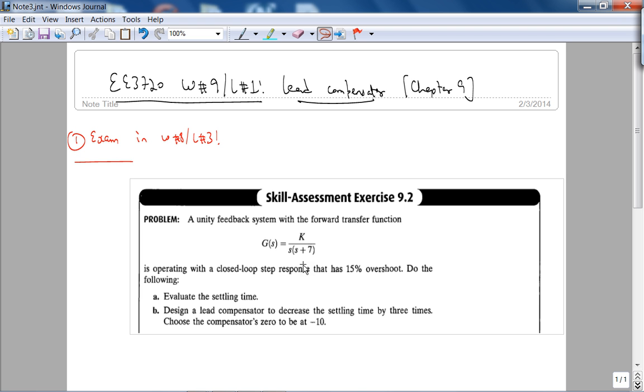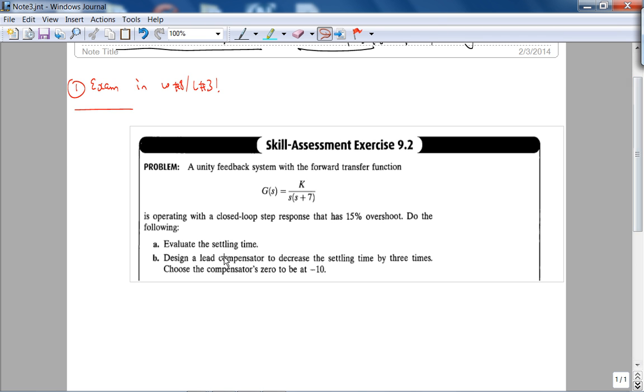It's very simple to understand the lead compensator through an example. So it is the same unity feedback system that we used for the unit ramp input steady state error compensation using a lag compensator. So now we want to find the settling time, and design a lead compensator to decrease the settling time by 3. The compensator zero is given.